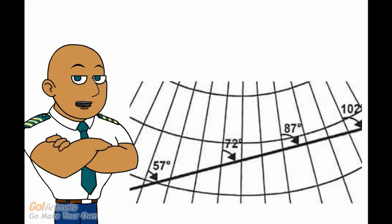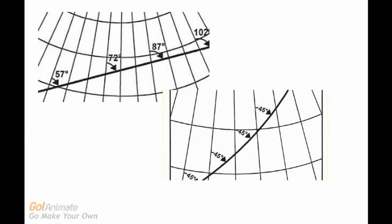Following a great circle track is rather inconvenient as the direction changes all the time. The difference between great circles and rhumb lines is most dominant at higher latitudes.